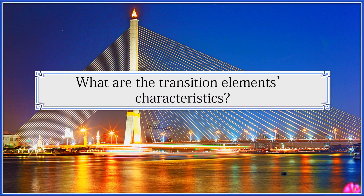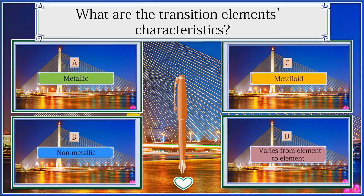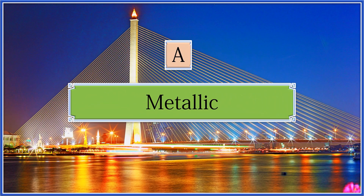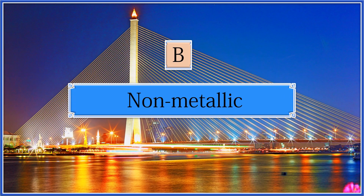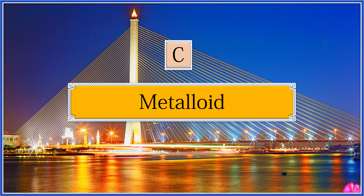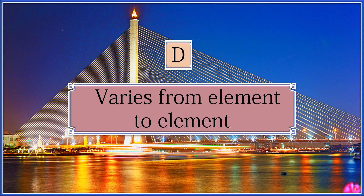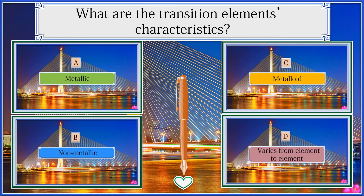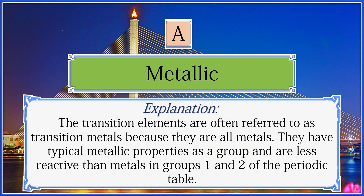What are the transition element characteristics: metallic, non-metallic, metalloid, or varies from element to element? The answer is metallic. The transition elements are often referred to as transition metals because they are all metals. They have typical metallic properties as a group and are less reactive than metals in groups 1 and 2 of the periodic table.